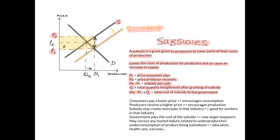Looking at the effects on stakeholders: consumers pay a lower price, so a subsidy encourages consumption. Producers receive a higher price than before, so a subsidy encourages production. The subsidy may also create more jobs in the industry, which benefits workers. However, the government pays the cost of the subsidy, which may anger taxpayers — so the government and taxpayers are worse off. A subsidy may correct market failure related to the underproduction or underconsumption of the product, which is why subsidies are granted to industries like education, healthcare, and vaccines.